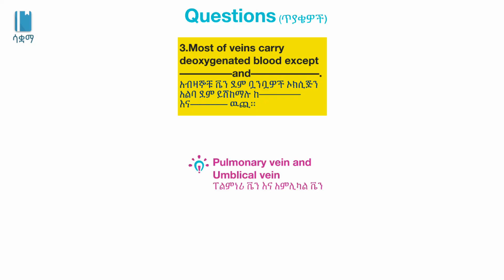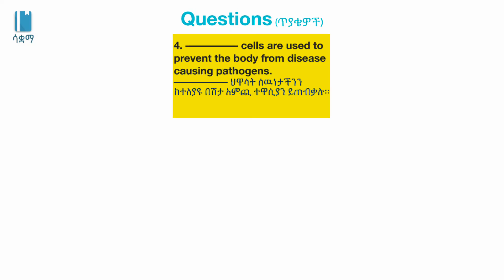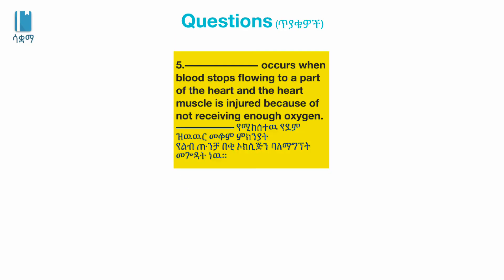This includes the pulmonary vein and the umbilical vein. White blood cells are used to prevent the body from disease-causing pathogens. A heart attack occurs when blood stops flowing to a part of the heart and the heart muscle is injured because of not receiving enough oxygen.